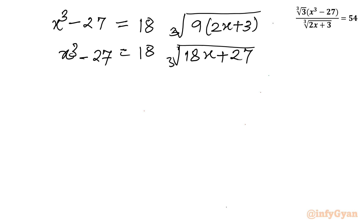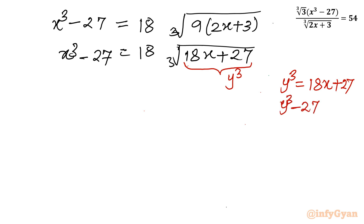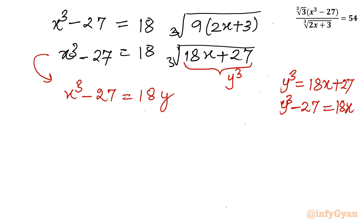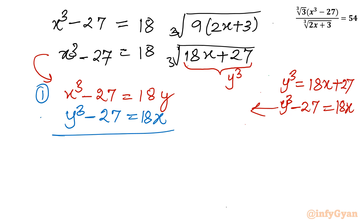Now I will use substitution. Since we have a cube root, let 18x + 27 = y³. So y³ = 18x + 27, or equivalently y³ - 27 = 18x. After substitution, our equation becomes: x³ - 27 = 18y. Writing this alongside the first substitution equation gives us the system — Equation 1: x³ - 27 = 18y, and Equation 2: y³ - 27 = 18x.